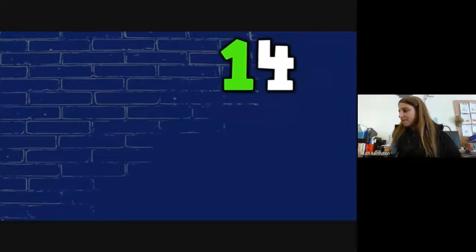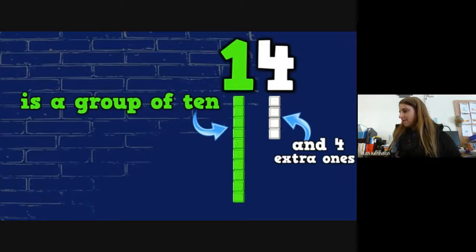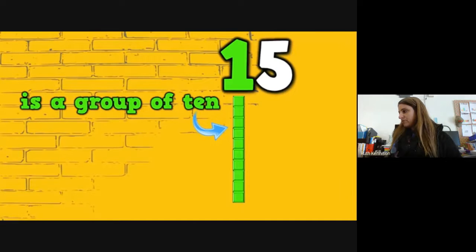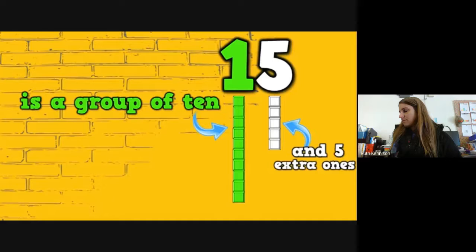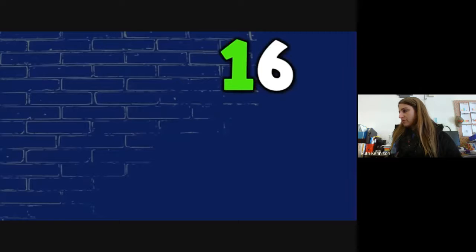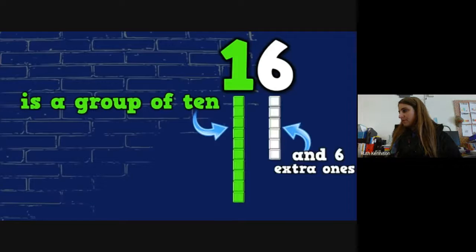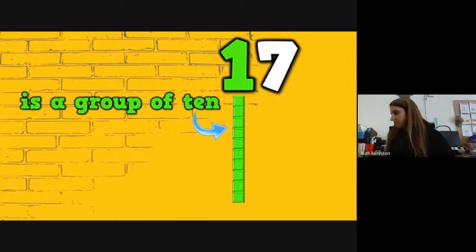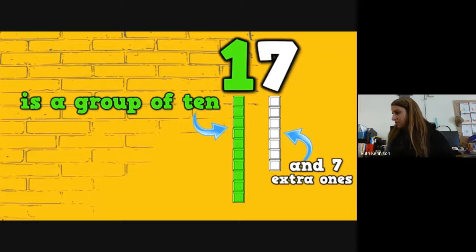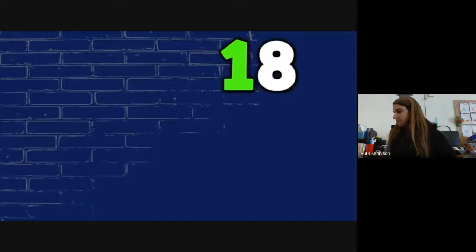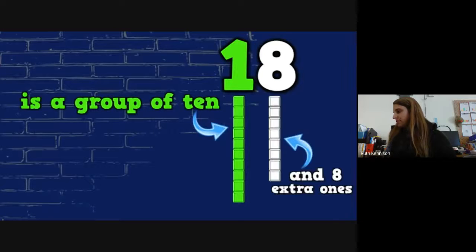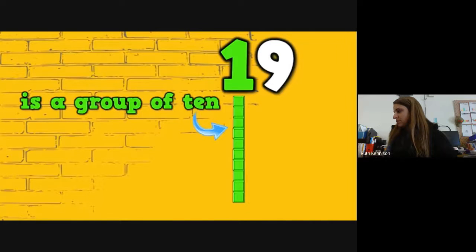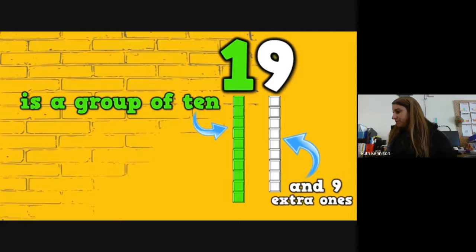14 is a group of 10 and 4 extra ones. 15 is a group of 10 and 5 extra ones. 16 is a group of 10 and 6 extra ones. 17 is a group of 10 and 7 extra ones. 18 is a group of 10 and 8 extra ones. 19 is a group of 10 and 9 extra ones.